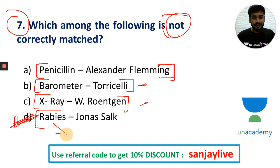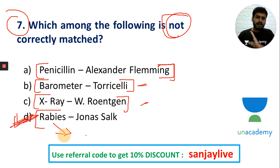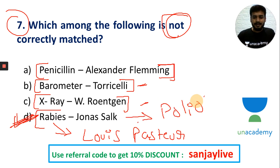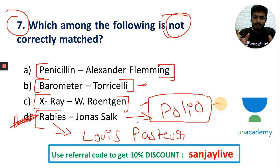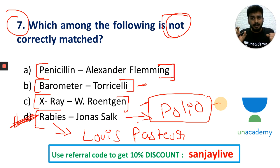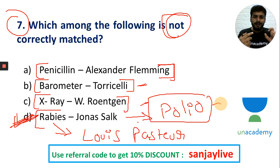Rabies — the father of microbiology is Louis Pasteur, who is connected to the rabies vaccine. Jonas Salk is connected to the polio vaccine. Diseases by type: malaria is caused by protozoa, HIV by virus, influenza by virus, cholera by the Vibrio cholerae bacterium.